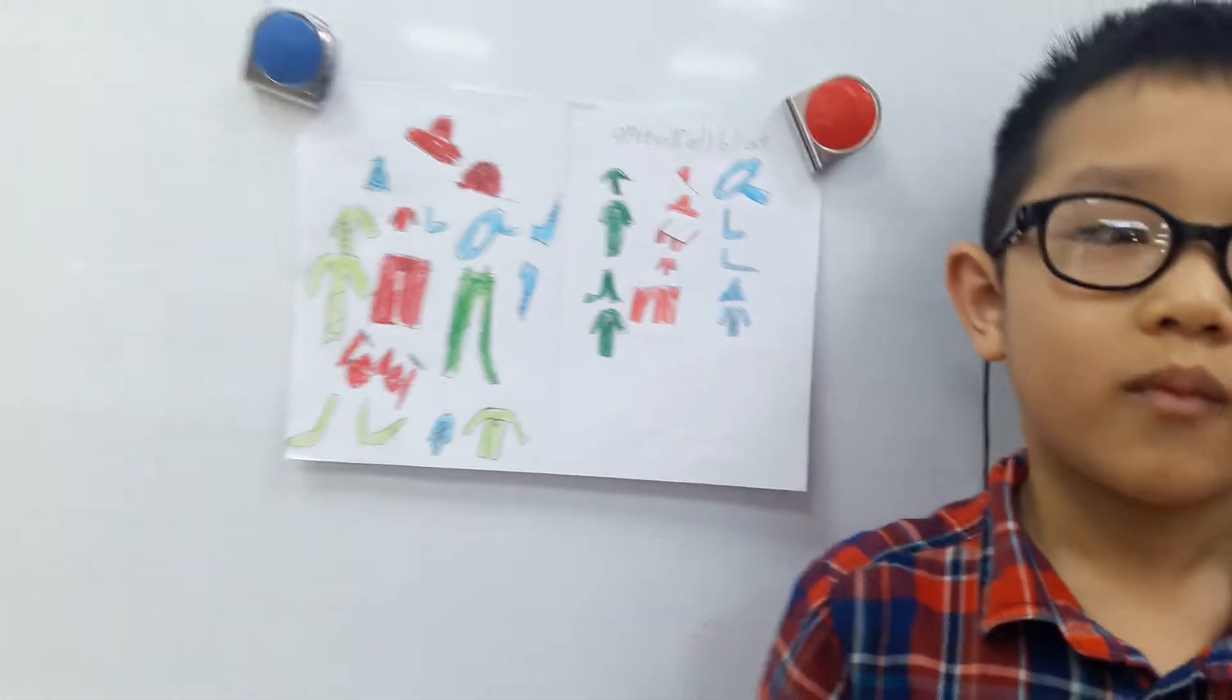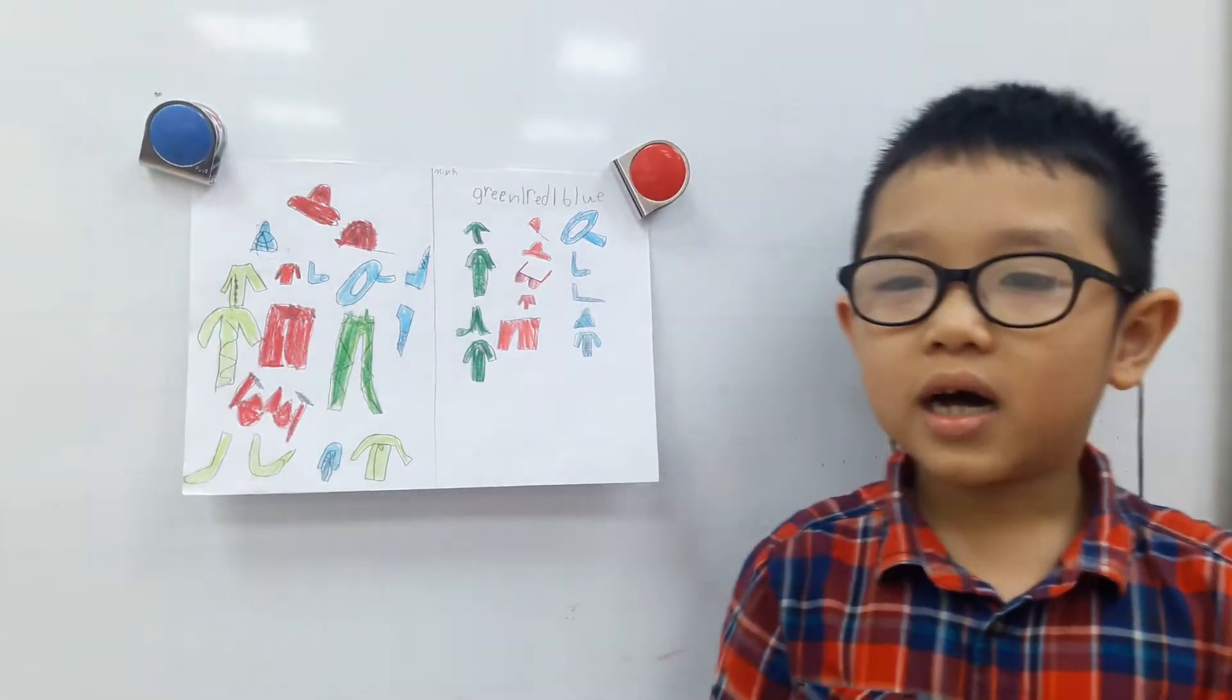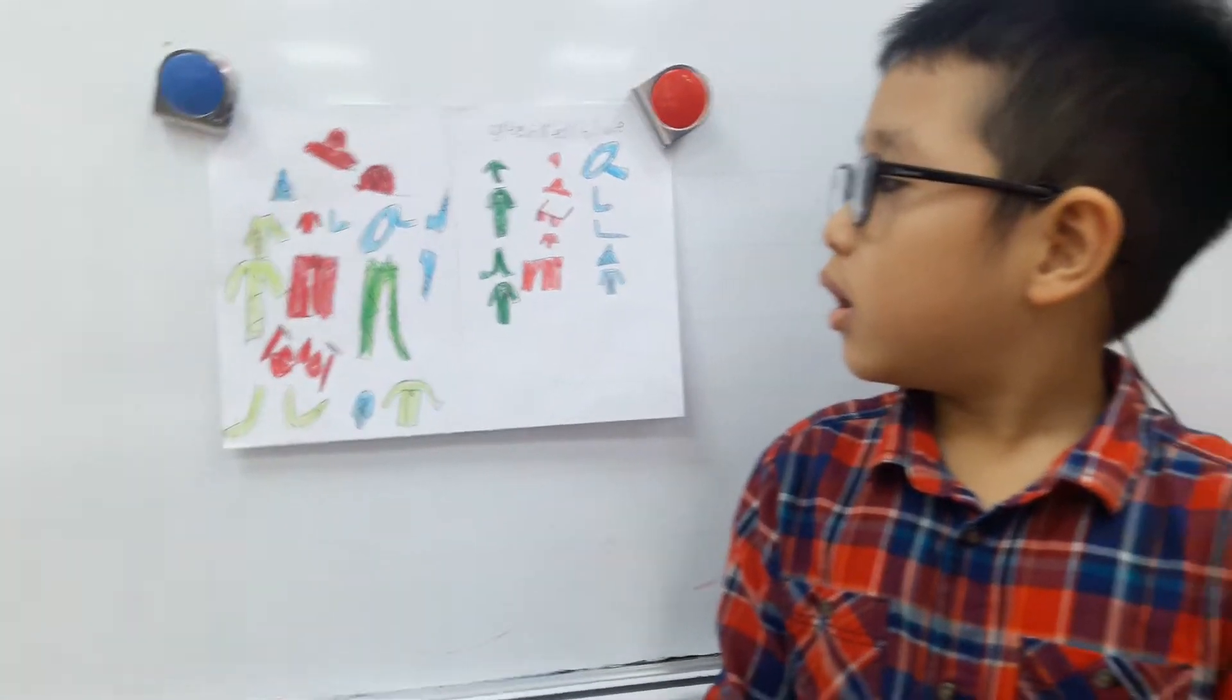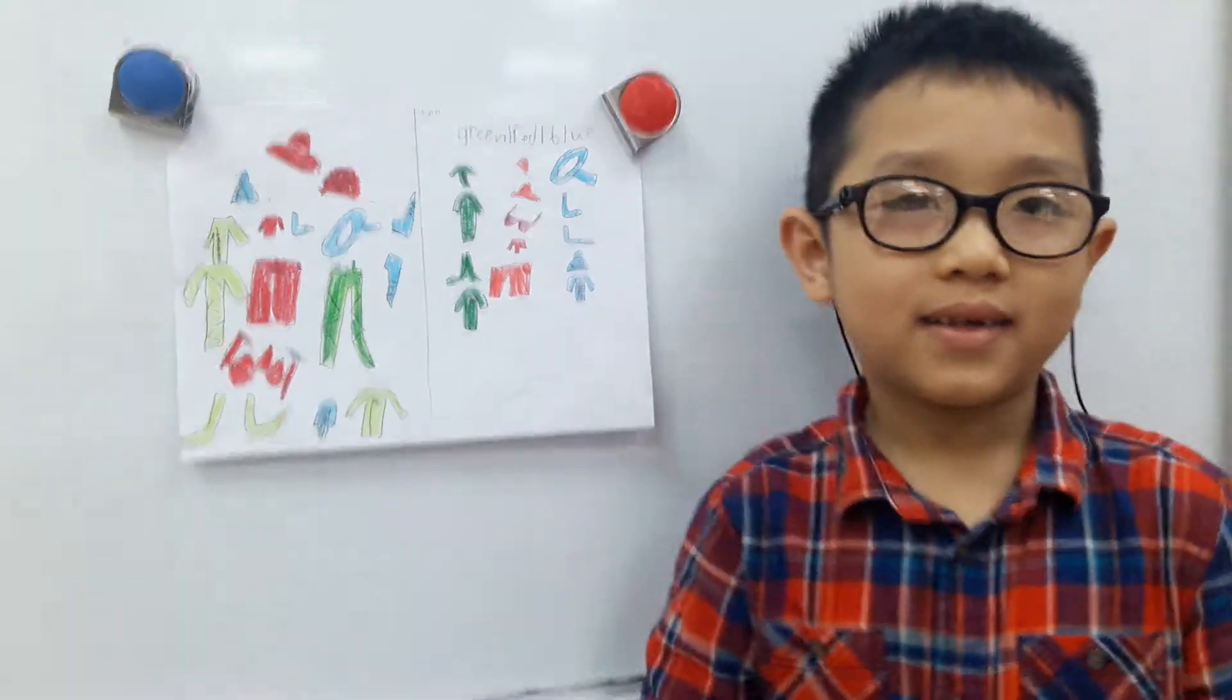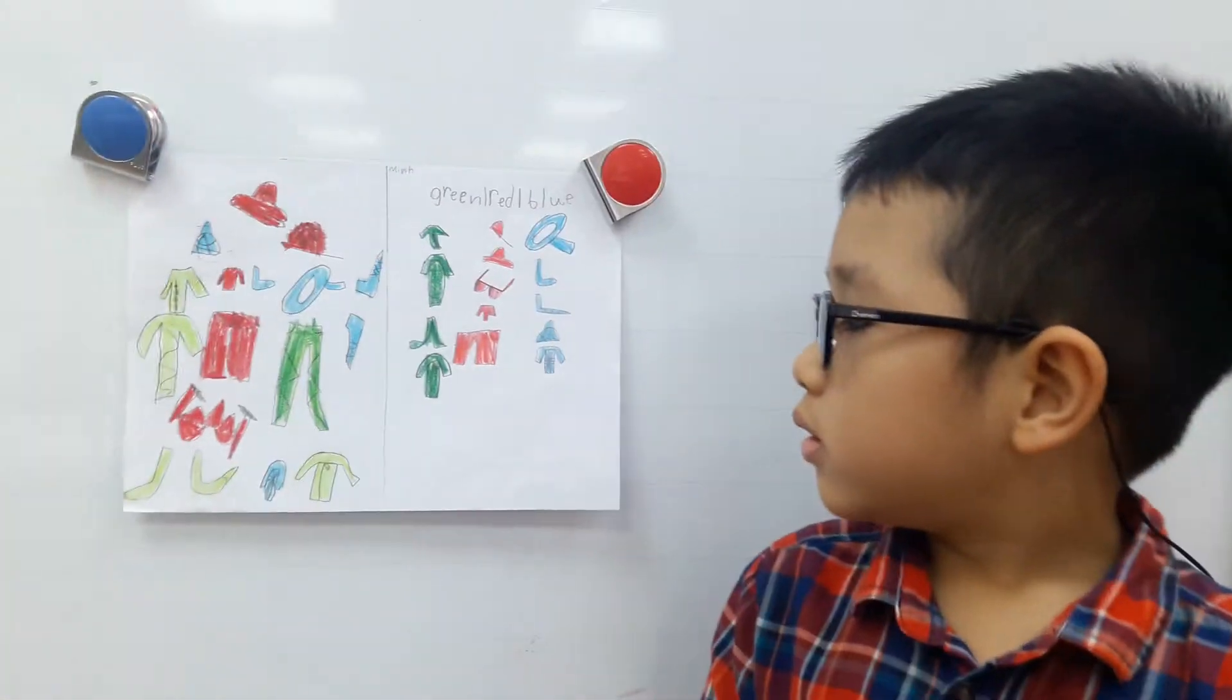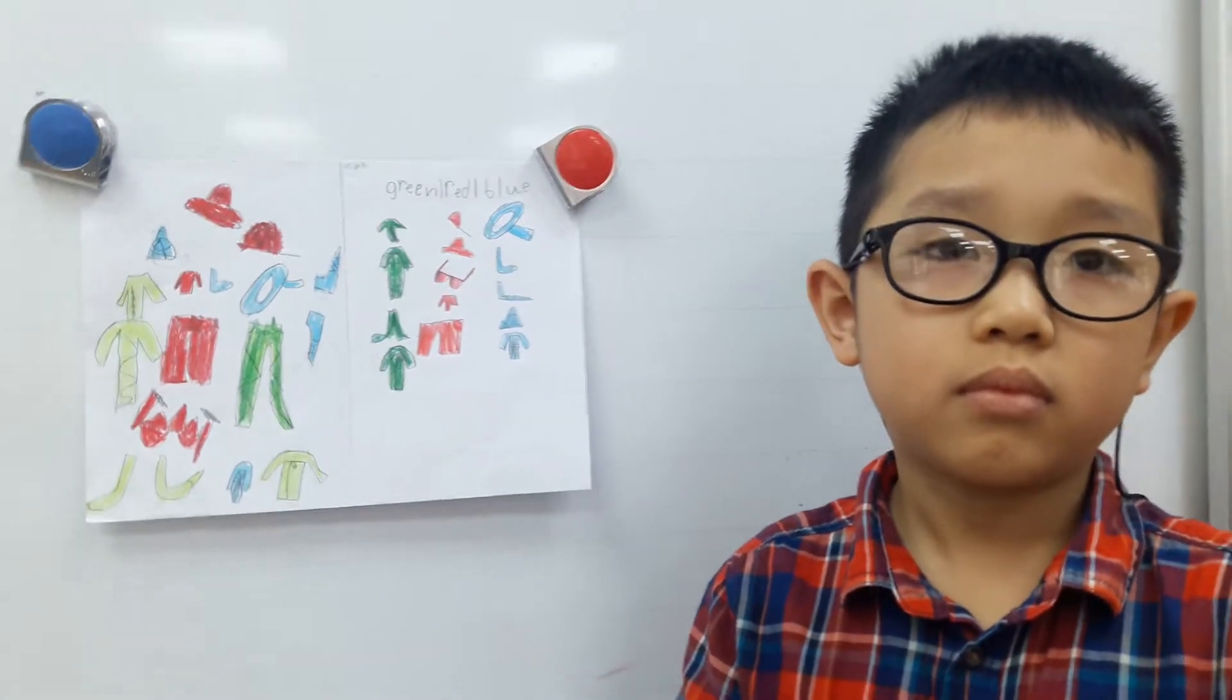So please tell me what this picture is of. There's a picture of clothes. Good. And what clothes did you draw over here? I drew a red cap. A red cap. What else? And a blue t-shirt. Good. Anything else? And a green jacket. Okay. So only three pieces of clothes?